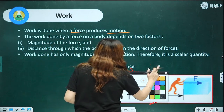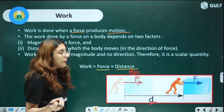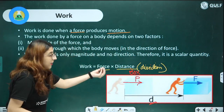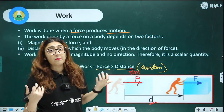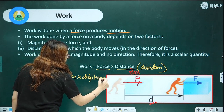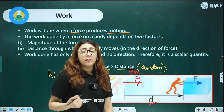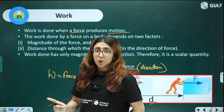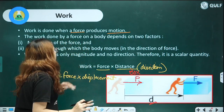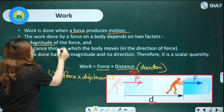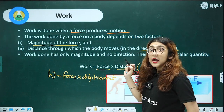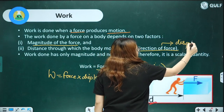In simple terms, work done is nothing but force into distance — or force into displacement. Direction is important here: the distance covered in the direction of force or opposite direction of force matters. Two factors are very important when talking about work: first, force; second, displacement or distance in a particular direction.